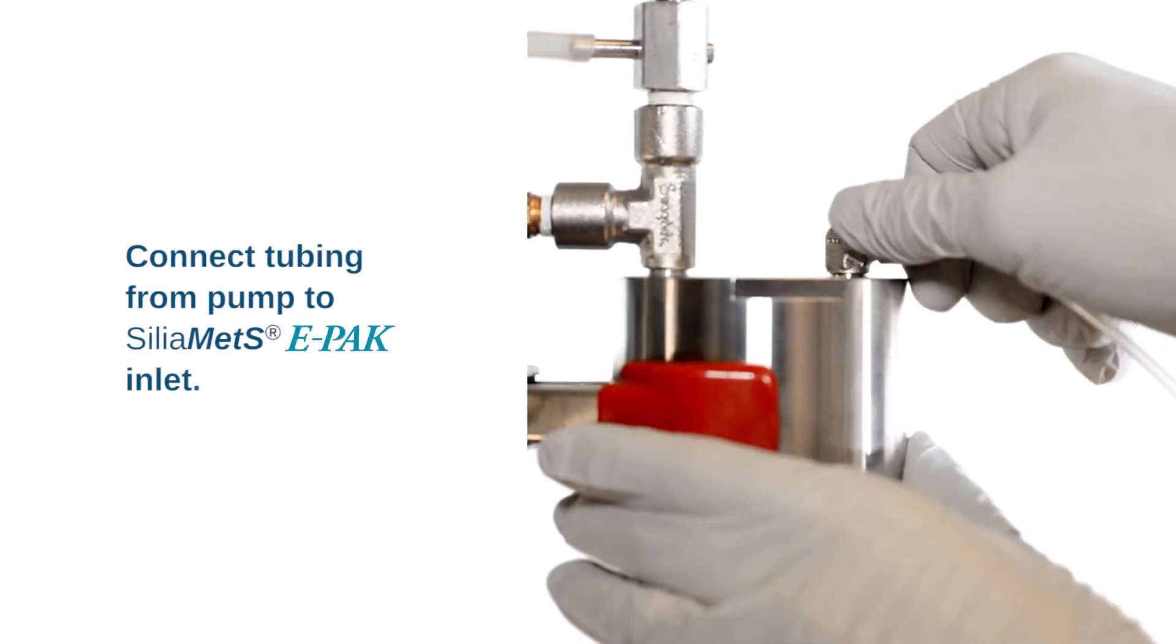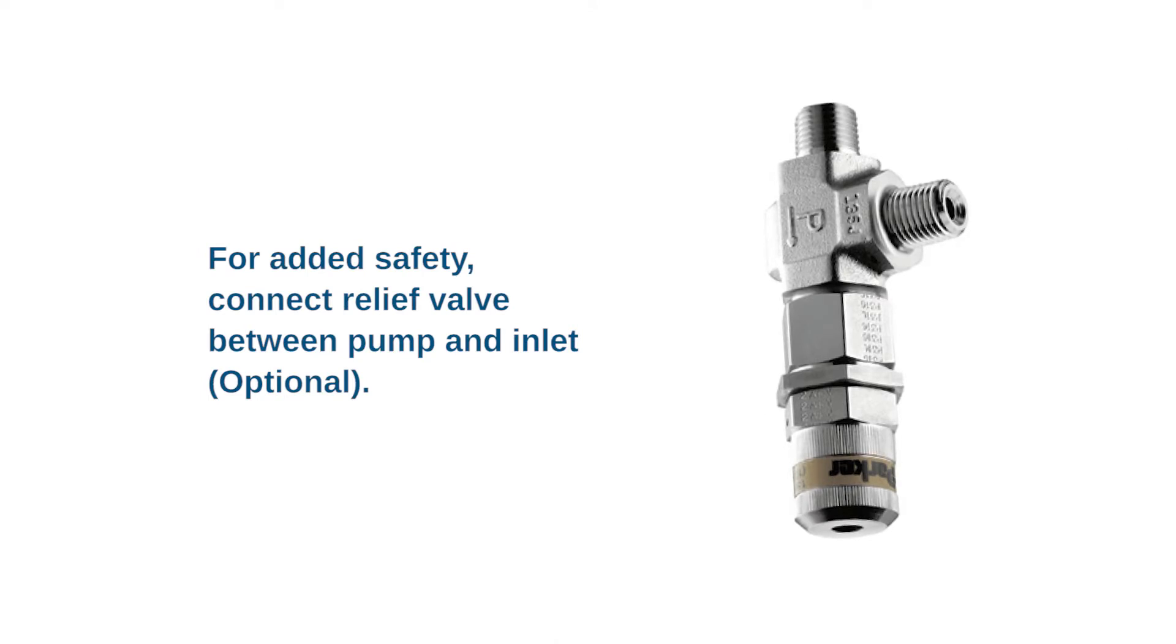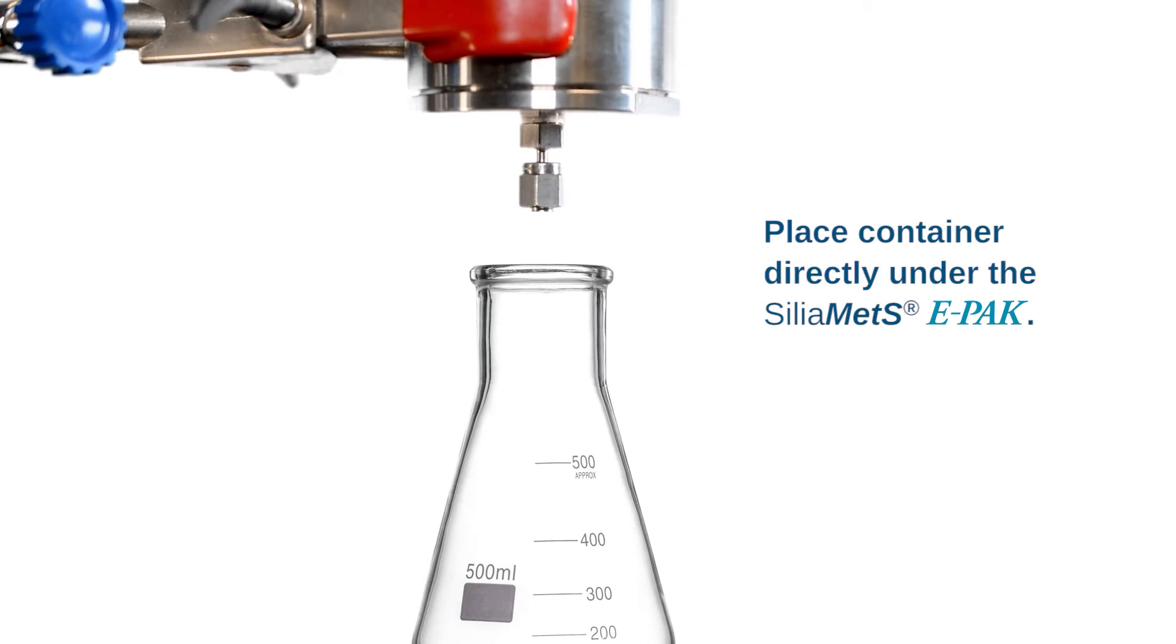Connect tubing from pump to SiliaMet E-PAK inlet. For added safety, connect relief valve between pump and inlet. Place container directly under SiliaMet E-PAK.